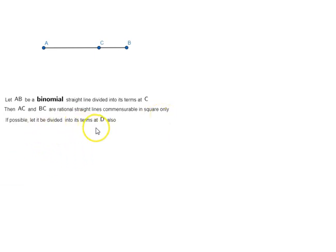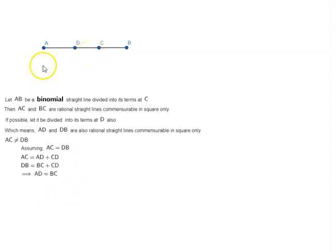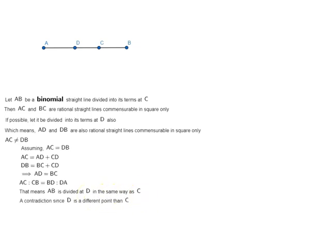If possible, let it be divided into its terms at D also, which means AD and DB are also rational straight lines commensurable in square only. Now AC is not equal to DB, because if AC equals DB, then AC equals AD plus CD. Similarly, DB equals BC plus CD, which implies AD equals BC. We can write this as the proportion AC is to CB equals BD is to DA, which would imply that AB is divided at D in the same way as at C. But that is a contradiction since D is a different point than C on AB. So AC cannot be equal to DB.